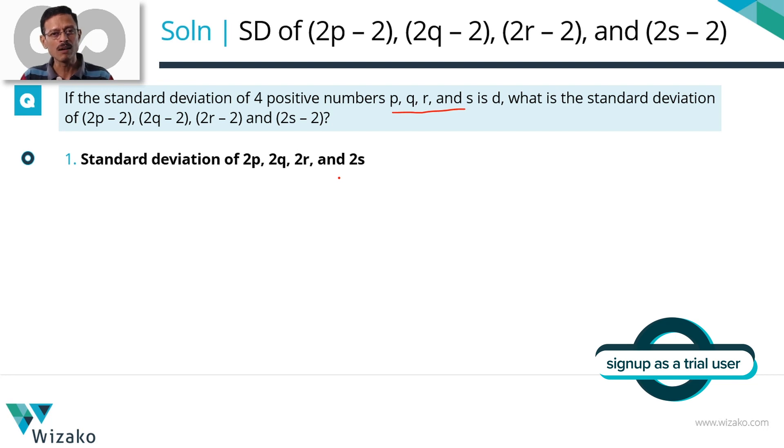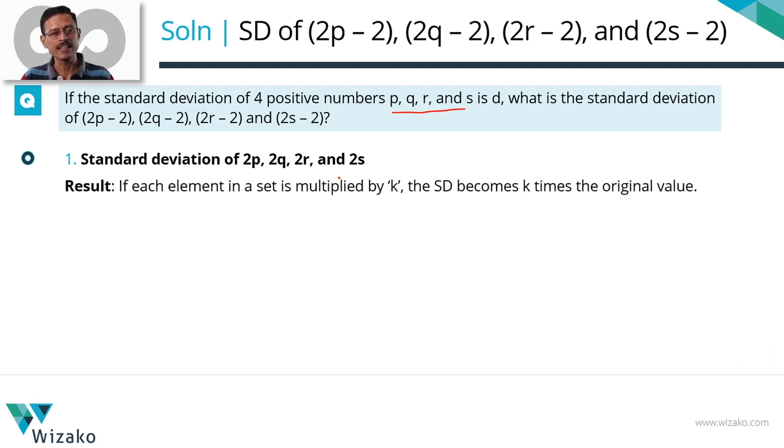This is where one of the properties about multiplying each element by a K comes of use. If each element in a set is multiplied by a K, the standard deviation also gets multiplied by K. So new standard deviation is going to be K times the old one. So the standard deviation for 2P, 2Q, 2R and 2S will be twice that of the standard deviation for P, Q, R and S.